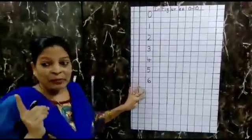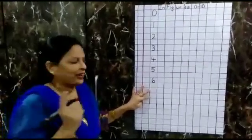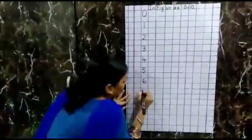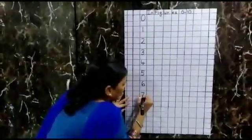Now after 6, what number comes? 7. Very good. Draw a slipping line and a slanting line. That makes number 7.